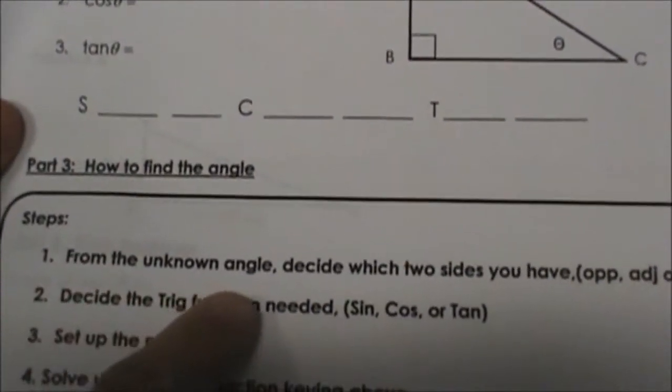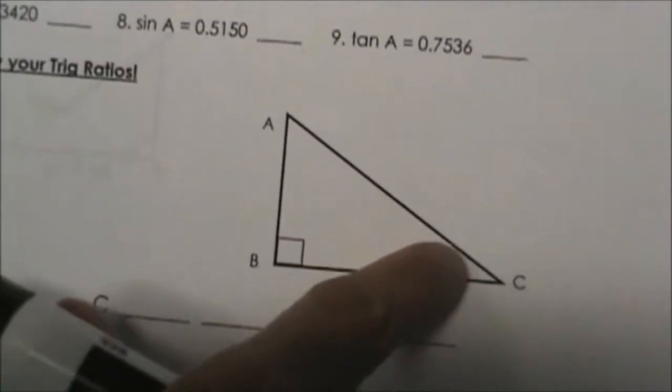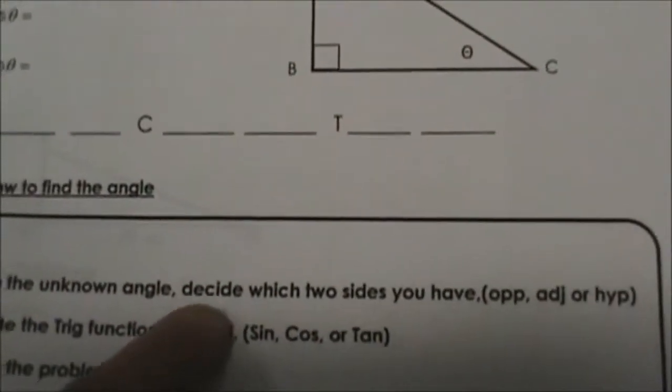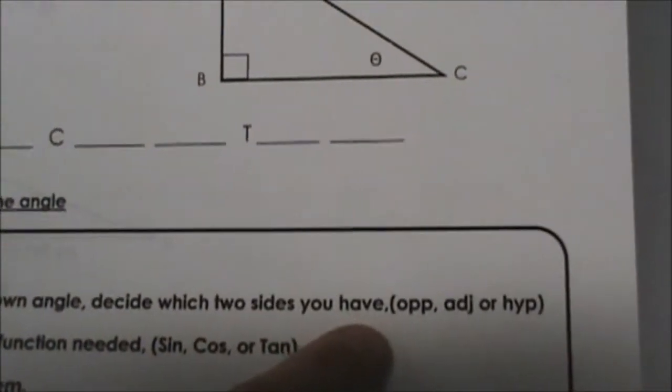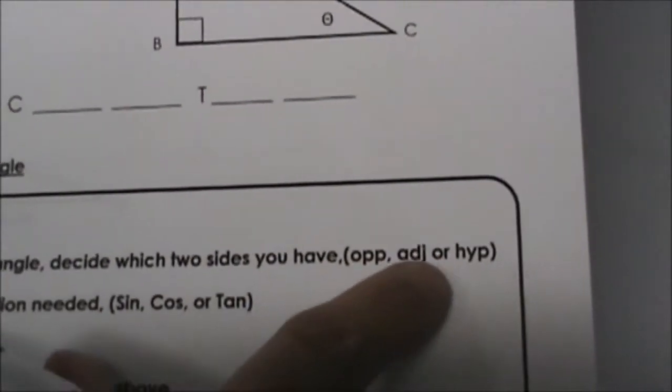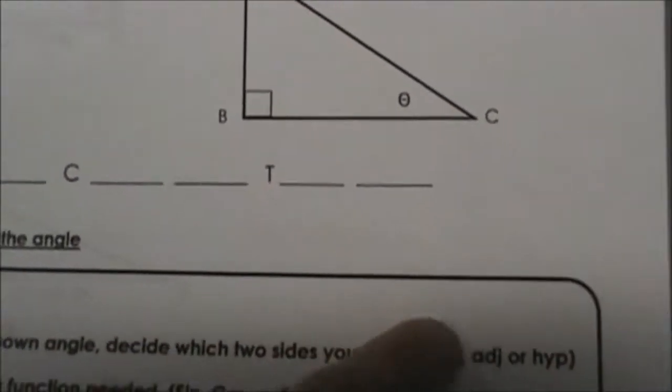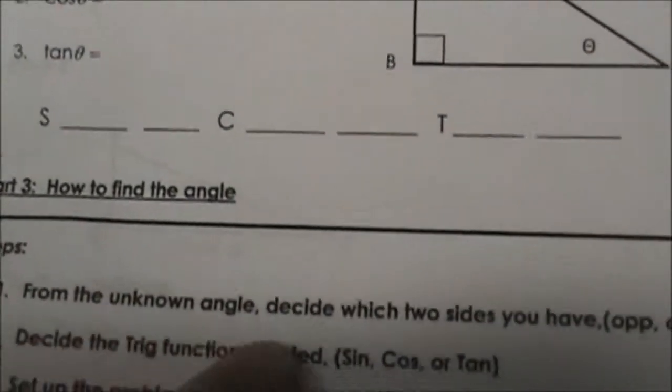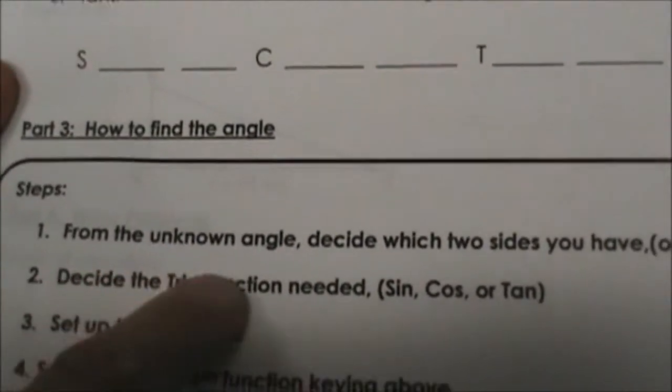First, we're going to find the unknown angle, so we're going to reference it and decide which two sides you have. Do I have opposite, adjacent, or hypotenuse? That will help us decide which trig function we're going to use.